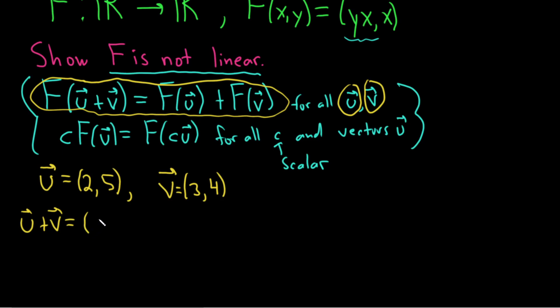So u plus v. These are vectors, so you just add the components. 2 plus 3 is 5. And 5 plus 4 is 9. Super simple. Just add the first coordinate and add the second coordinates. And then we're going to apply F to this. So F of 5 comma 9.